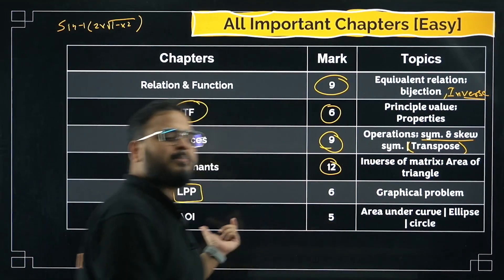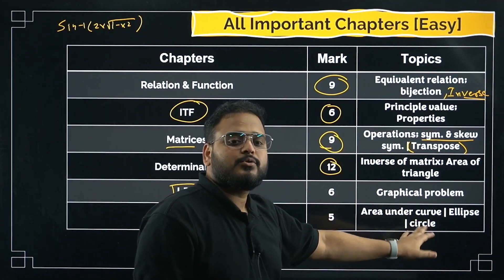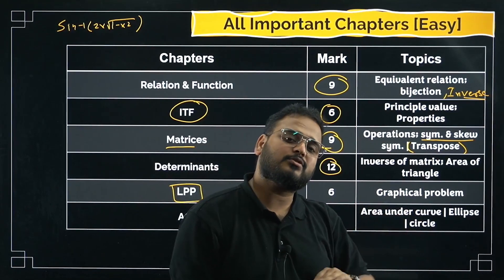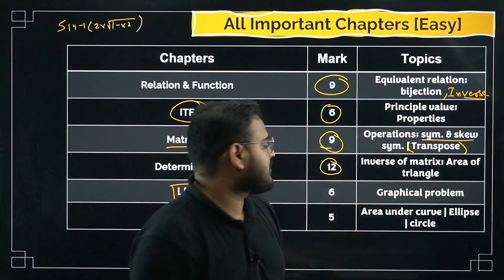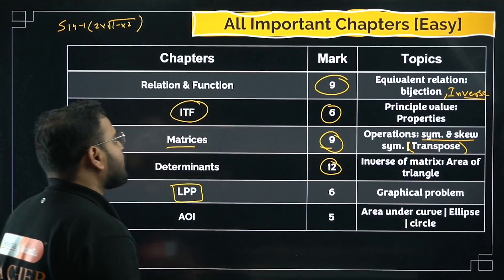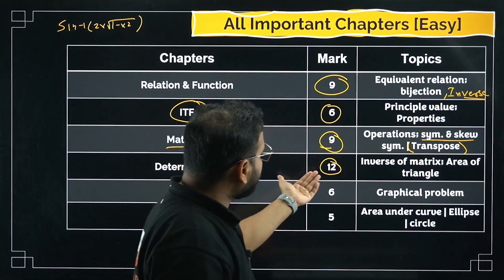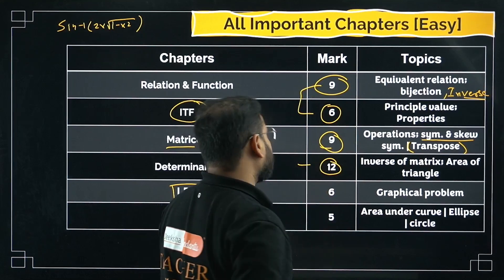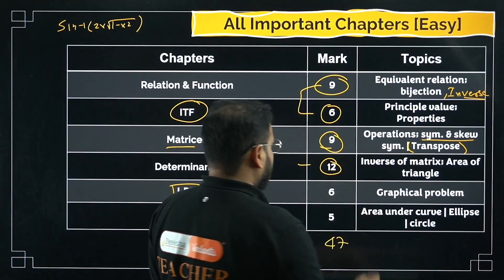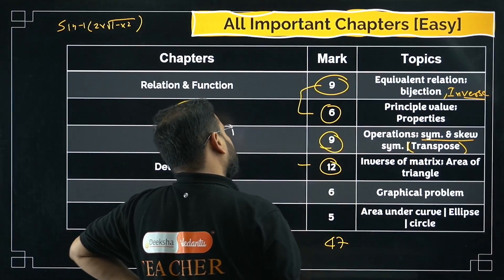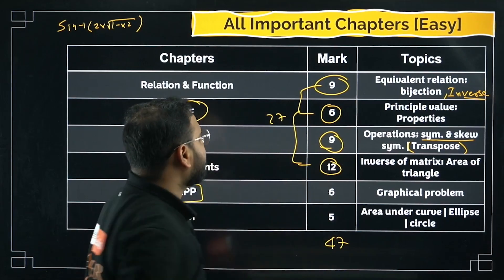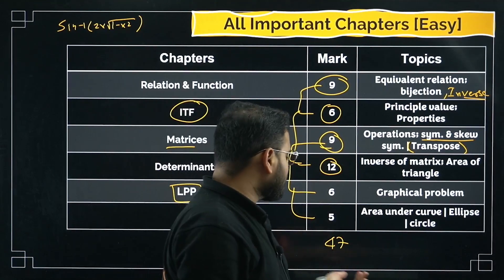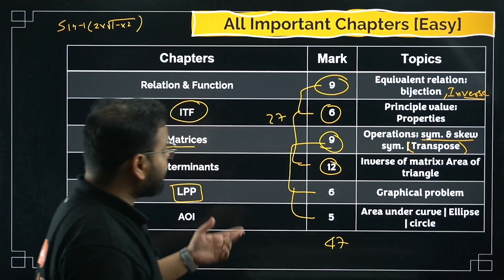AOI — Application of Integrals — simple chapter, 5 marks. Area under the curve, ellipse, and circle questions are asked. Check the Brahma series and KSET sessions where those questions have been solved. If you take the total of all easy chapters: 9 + 6 + 9 + 12 + 6 + 5 = 47 marks. Combined with the 47 moderate marks, that is 94 total out of 120 including optional questions — meaning if you plan wisely, these chapters alone can cover 84 out of 120.